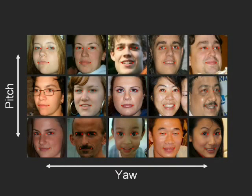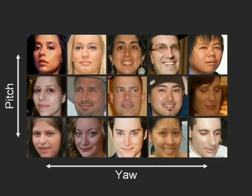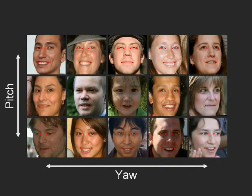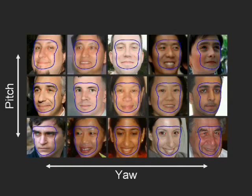The faces are binned based on pose, and within each pose bin they are automatically aligned based on the features. For each pose bin, a mask is used to define the face replacement region.